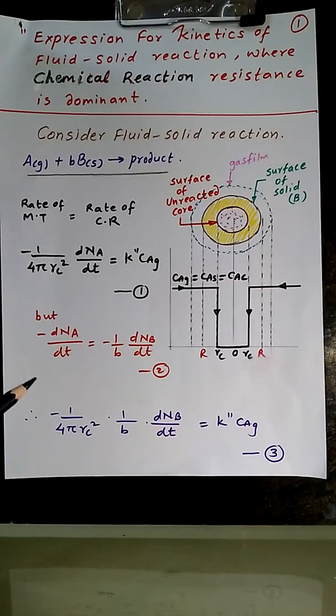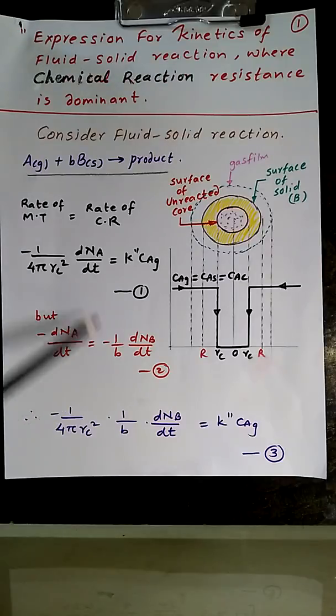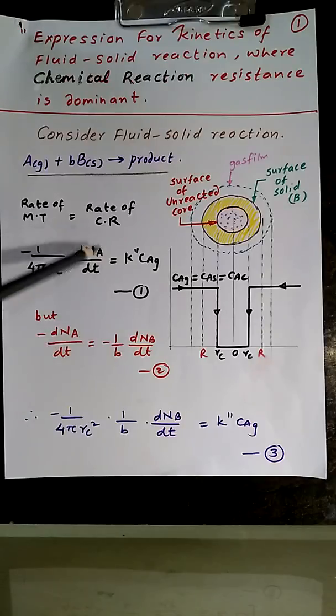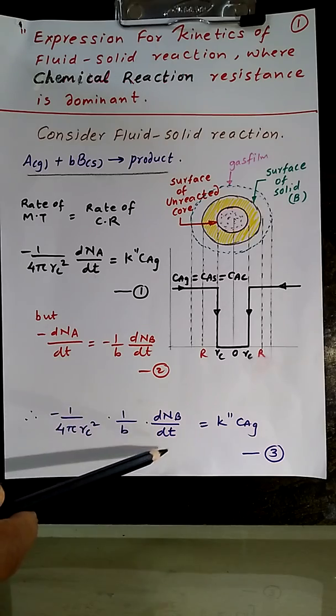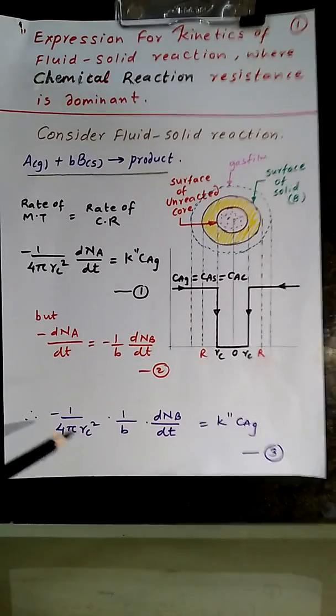Now from stoichiometry we can write -dNA/dt = -1/b dNB/dt. So we can substitute -dNA/dt by -1/b dNB/dt. So our expression will be -1/(4πR²) × 1/b dNB/dt which is k'' CAG.